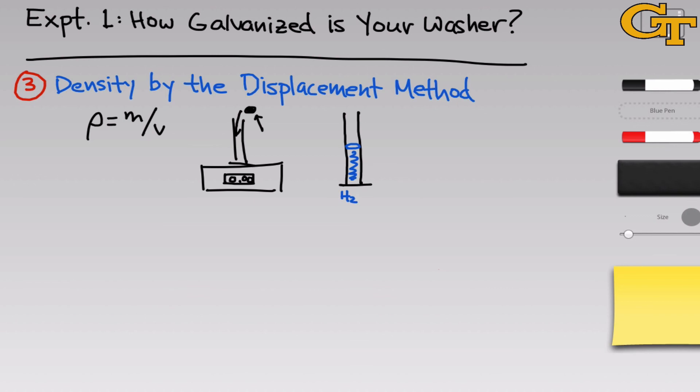The idea is that if we start with a graduated cylinder containing some water at a volume V1, once we place the sample into this graduated cylinder, the level of the water is going to increase as a result of the volume taken up by the sample. So if I draw the washer here in black at the bottom of the graduated cylinder, due to its volume, the water, whose amount hasn't changed, is going to move upwards and we're going to get a new volume reading V2.